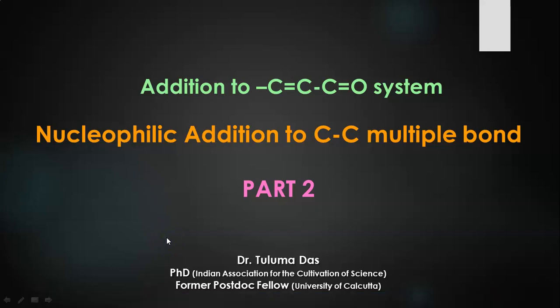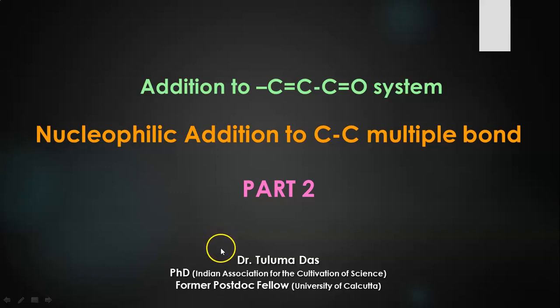In Part 1 of nucleophilic addition to C=C multiple bonds, we had a preliminary idea of this reaction — what nucleophilic addition to C=C multiple bonds is. We also saw that addition of a nucleophile to an alkene is not very common. The reason is repulsion between the electron density of the nucleophile and the pi electron cloud of the alkene. So when some electron withdrawing group is present, this type of nucleophilic addition becomes possible, because the EWG reduces the electron density of the C=C multiple bond.